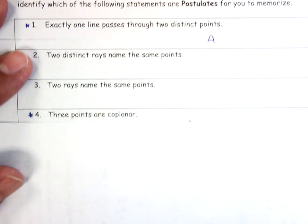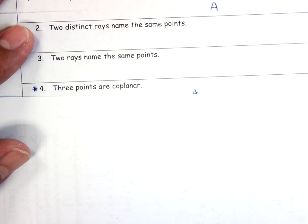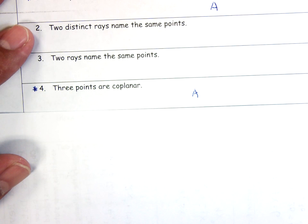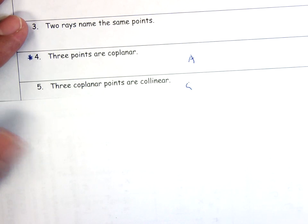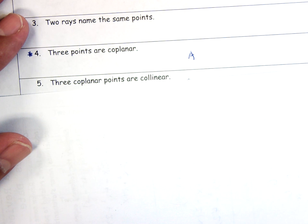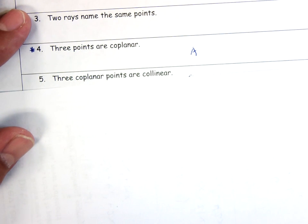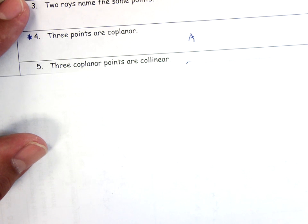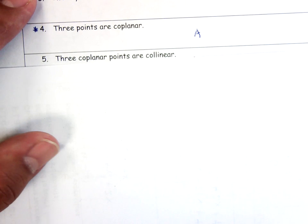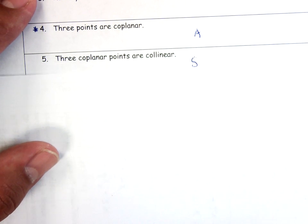Number four. Three points are coplanar. Always true. Put a little star by that one. Three coplanar points are collinear. So it says, if I have three points and they all lie on the same plane, then they also lie on the same line. Always, sometimes, never. What do you think? Sometimes.